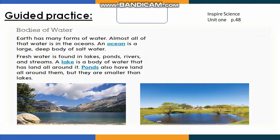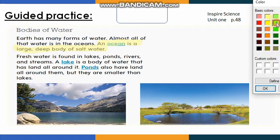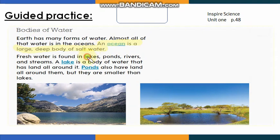I want you to highlight this information because it's very important: an ocean is a large, deep body of salt water. Now let's read: fresh water is found in lakes, ponds, rivers, and streams.